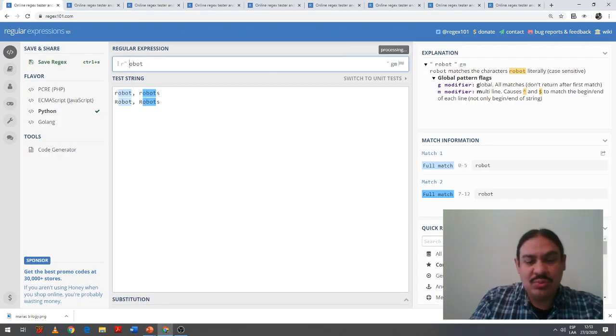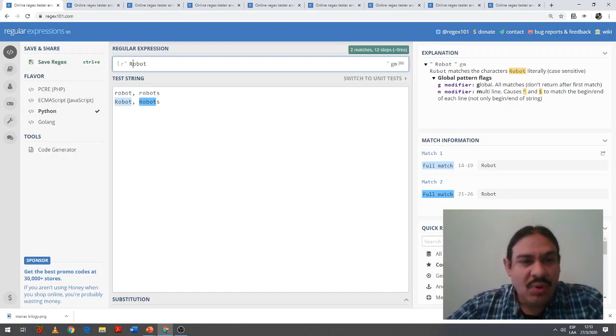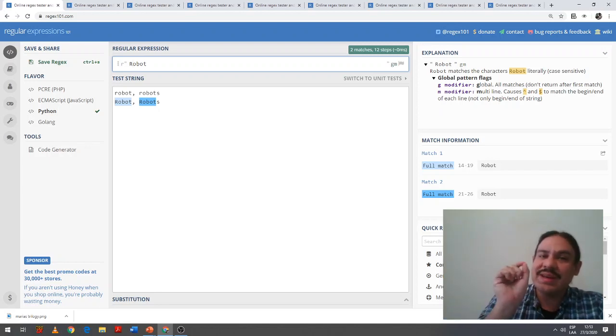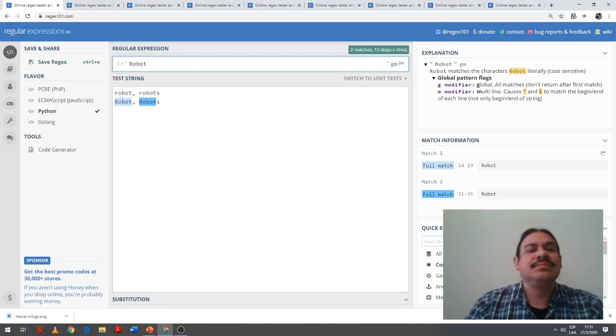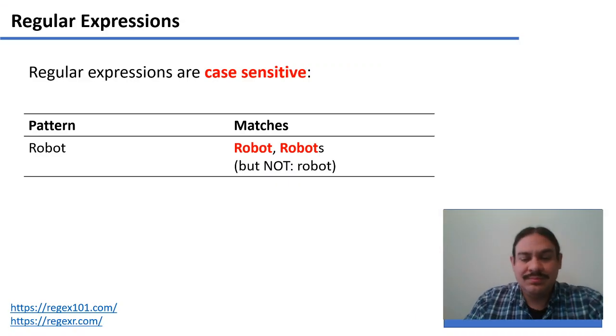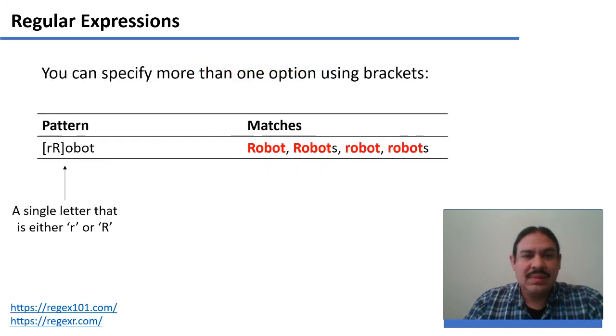For example, if I change this to uppercase robot, you can see how it finds the words in the second line, but not the words in the first line, because it's literally looking for uppercase R, lowercase O, lowercase B-O-T.